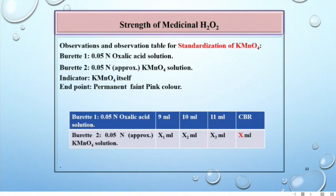Observations and observation table for standardization of permanganate. Burette 1 contains 0.05 normal oxalic acid solution, burette 2 contains 0.05 normal permanganate solution. Indicator is permanganate itself and endpoint is permanent faint pink color. Record the reading as X ml.